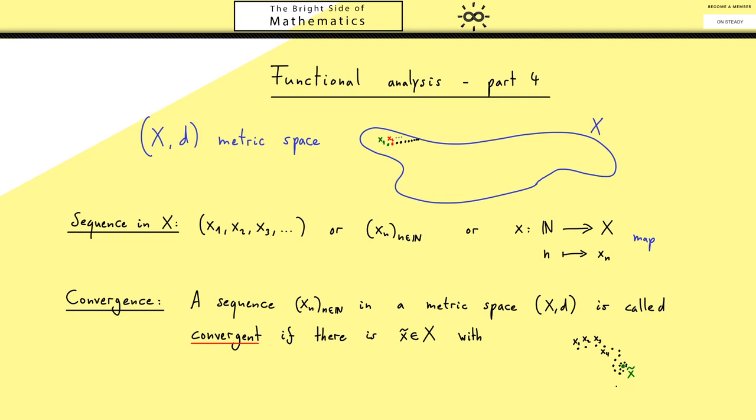We can just use an arbitrary epsilon ball. It should be centered at x tilde but then no matter how small we choose the epsilon, almost all the members of the sequence should be inside this ball.